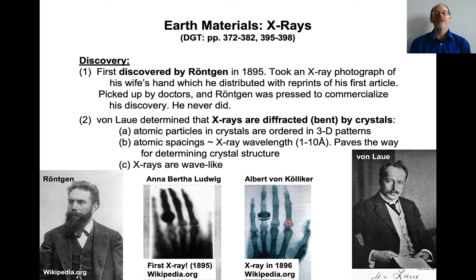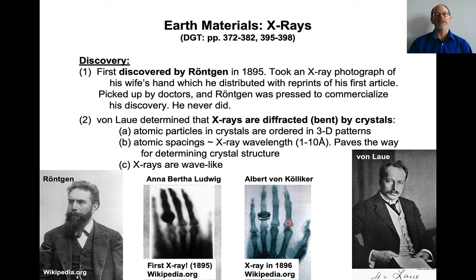Then von Laue figured out that x-rays are diffracted or bent by crystals, and he received a Nobel Prize for this. It implies that the atoms in crystals have to be organized in three-dimensional patterns — they can't be randomly distributed. It also implies that the spacings between atoms have to be on the same order as the wavelength of x-rays, which is on the order of 1 to 10 angstroms — about the distance between atoms in minerals. This sets the stage for determining crystal structures using x-ray diffraction, and it also showed that x-rays are wave-like.